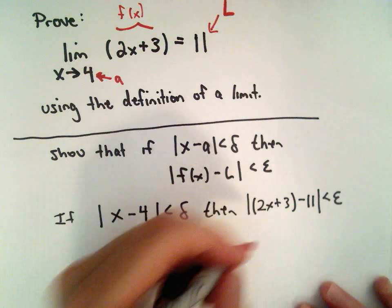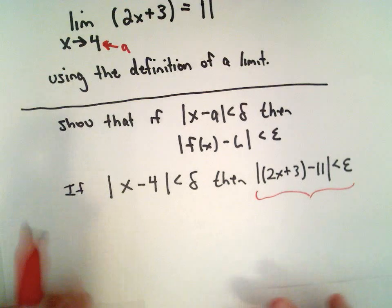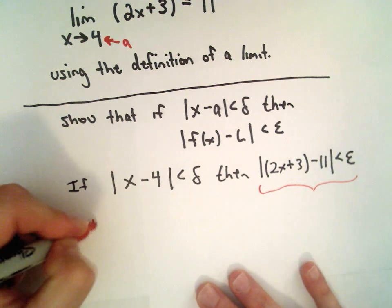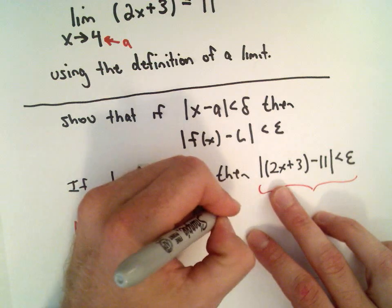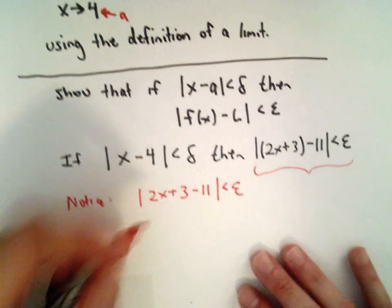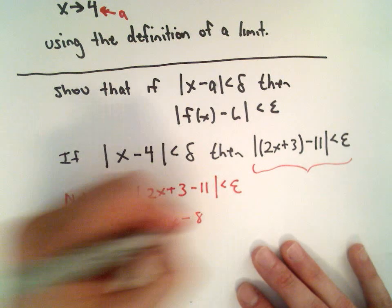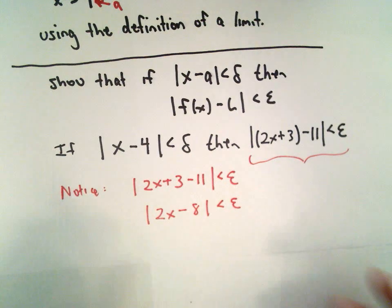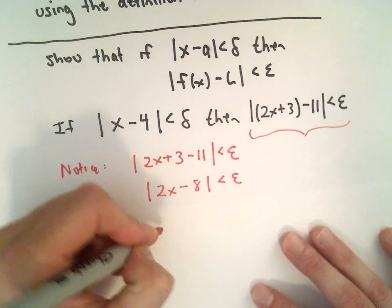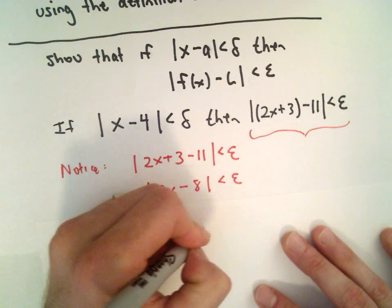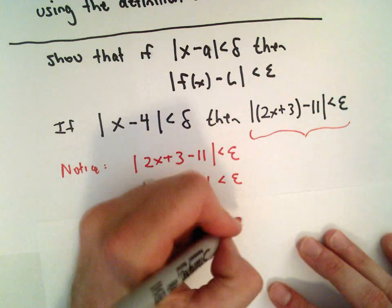Okay, so for these linear ones, the idea is you basically play with this part involving f of x and the limit. So let's notice, we're going to do a little arithmetic. So we've got 2x plus 3 minus 11, the absolute value of that less than epsilon. Well that's going to give us 2x plus 3 minus 11, that's 2x minus 8. We can simplify that expression in those parentheses. Well the 2, I could factor that inside the absolute value. I could factor that out and have 2 multiplied by x minus 4 less than epsilon.